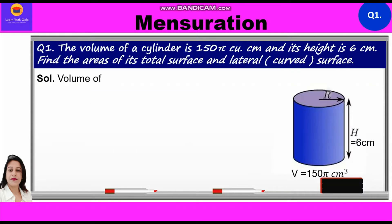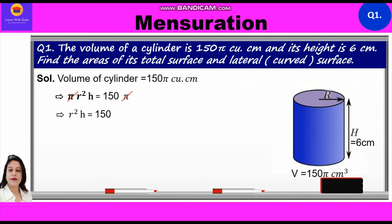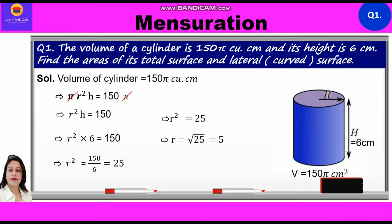Starting with the solution: volume of cylinder = 150π cm³, which implies πr²h = 150π. The π cancels, leaving r²h = 150. Substituting h = 6 cm, we get r² × 6 = 150, so r² = 150/6 = 25. Therefore r = √25 = 5, so radius = 5 centimeters.